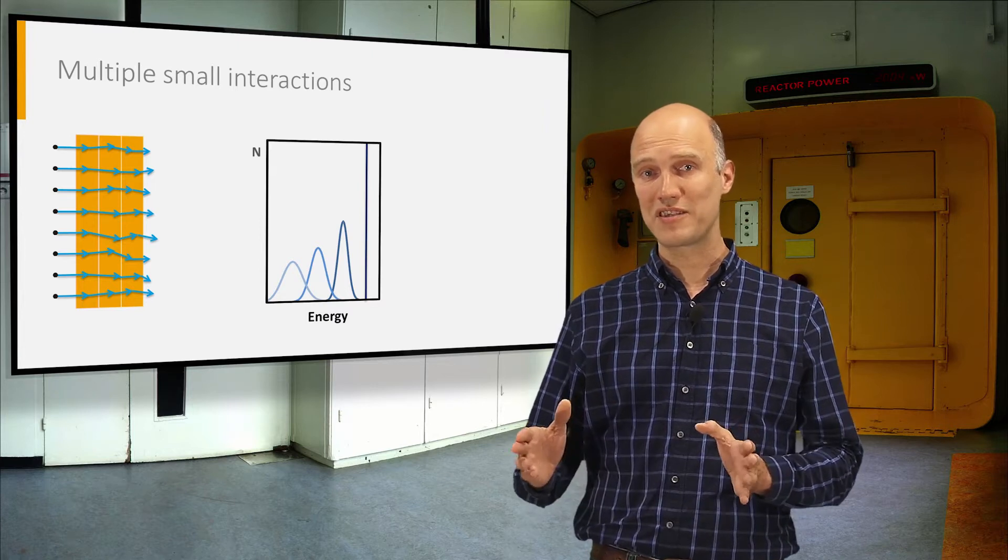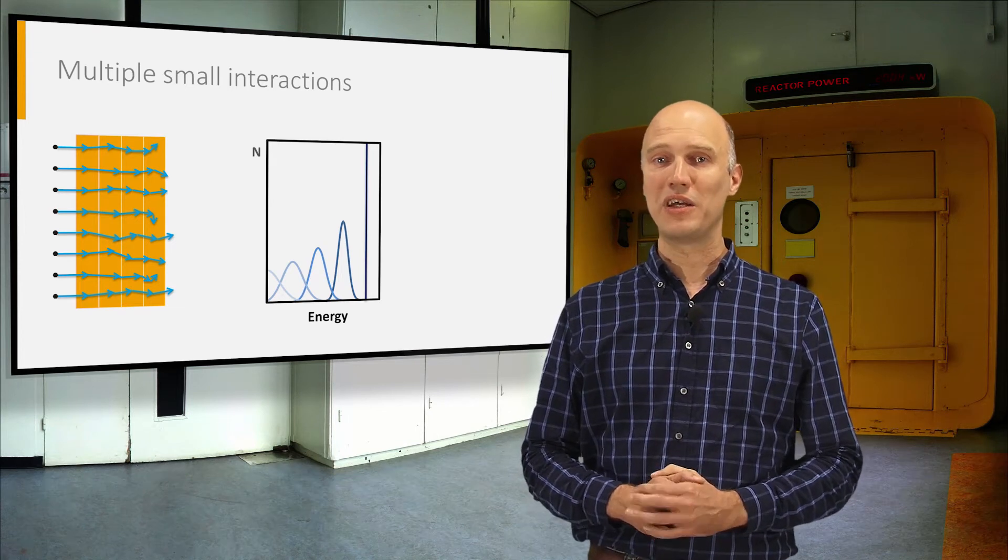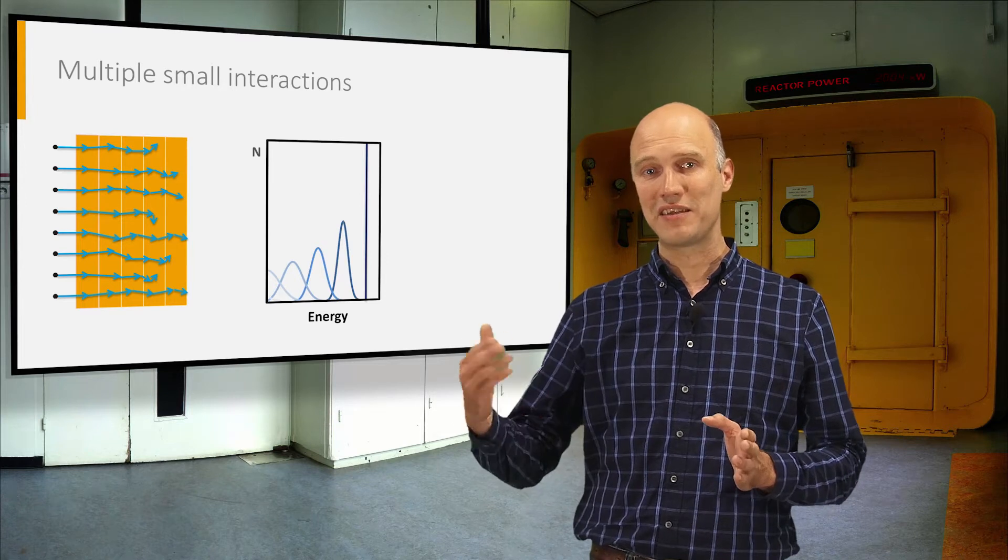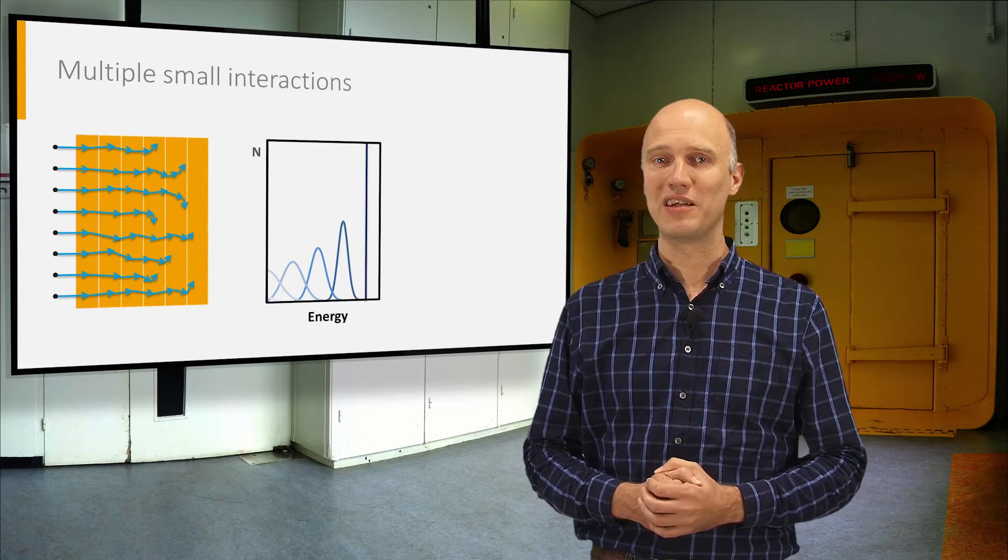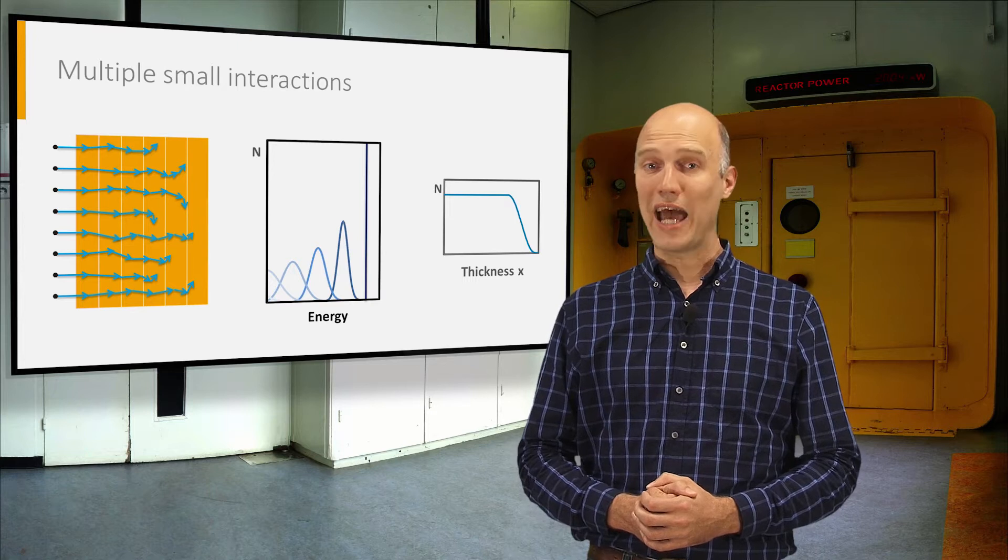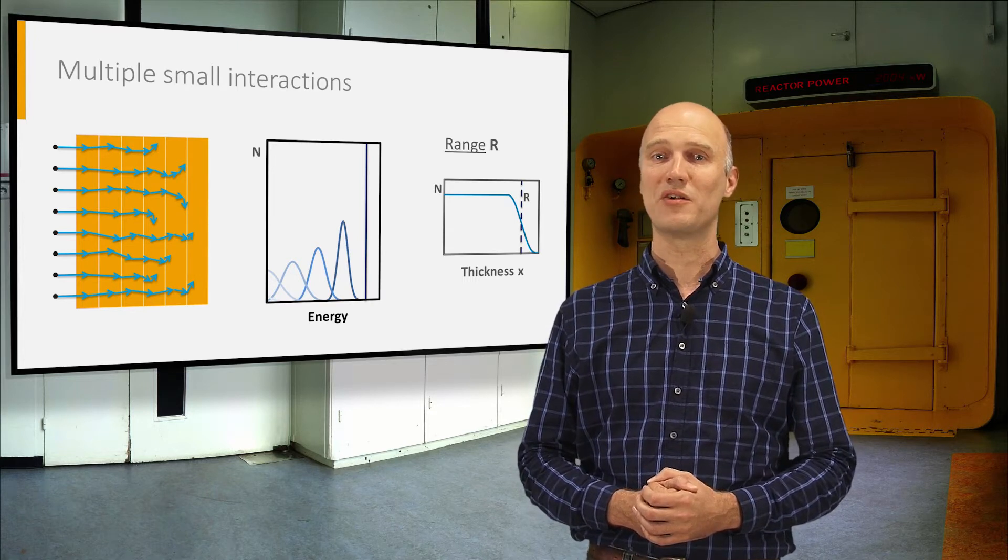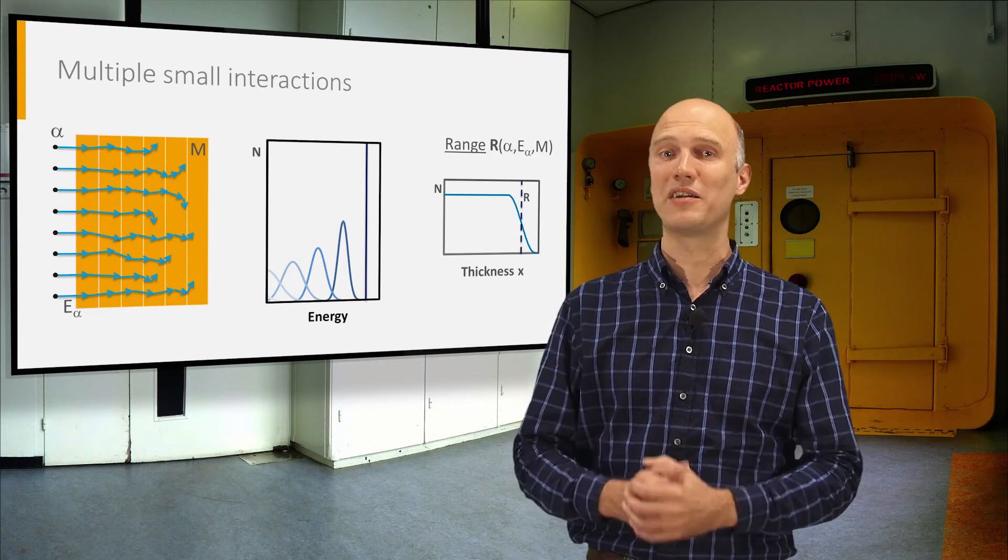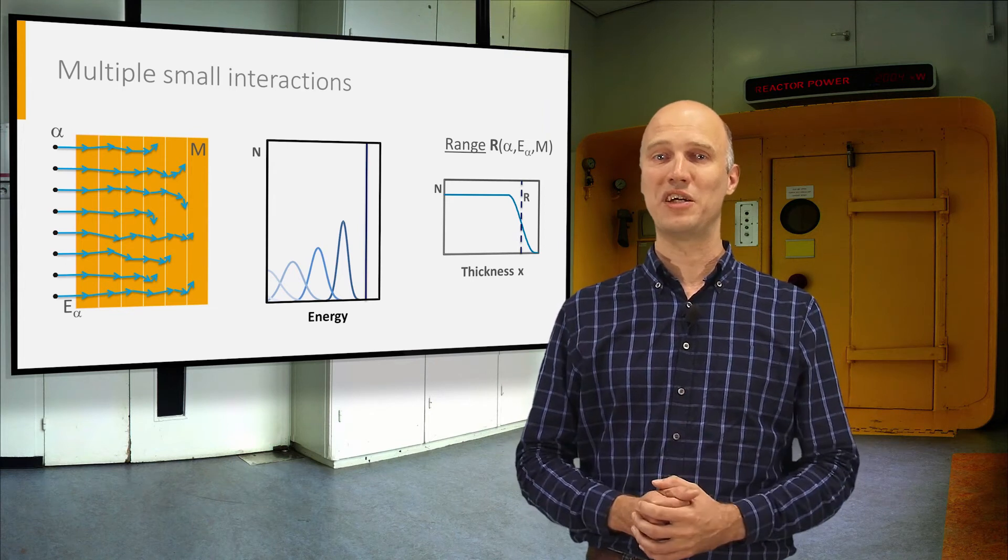Starting at a certain slab thickness, some of the particles will have lost all of their energy. They will be fully stopped in the material. If we keep increasing the thickness of the slab, more and more particles will be stopped until, eventually, no more particles are passing through. The average thickness at which the particles in the beam are stopped is called the range. This range is typical for this particular type of radiation with this specific energy in this specific material.